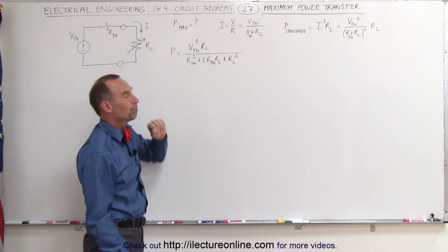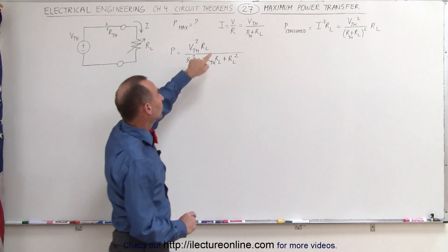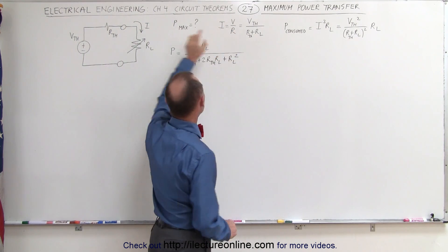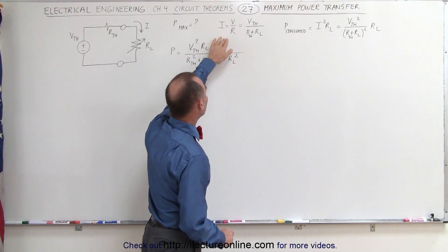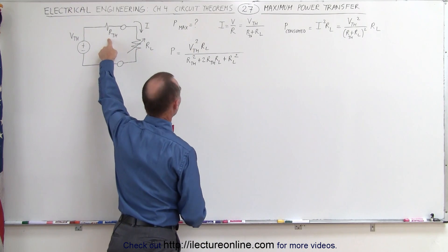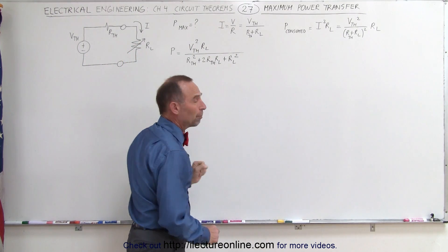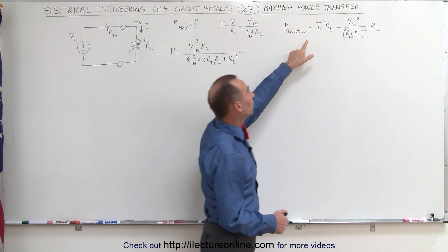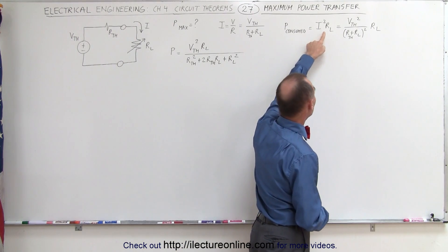So we're looking for power maximum. Remember Ohm's law, which says that I equals V divided by R. V will be the Thevenin voltage, and R will simply be the sum of the Thevenin resistance plus the load resistor. The power consumed is always I squared times R, and in this case R will be the load resistor.